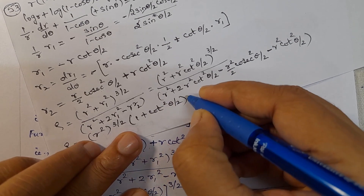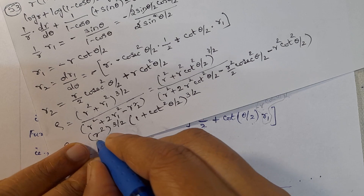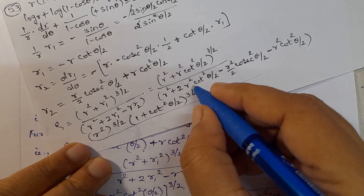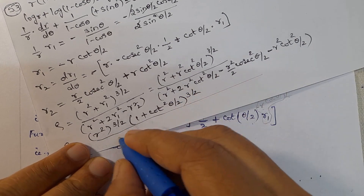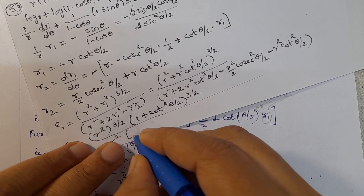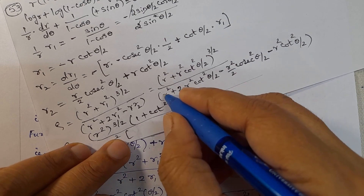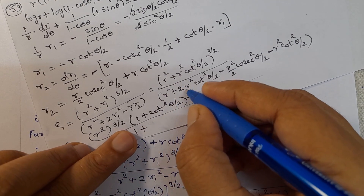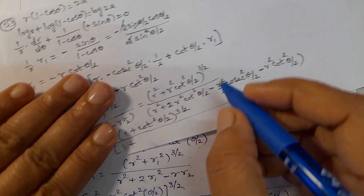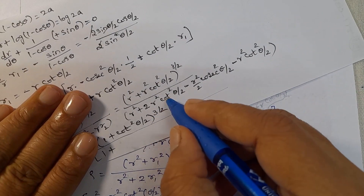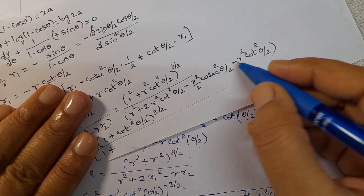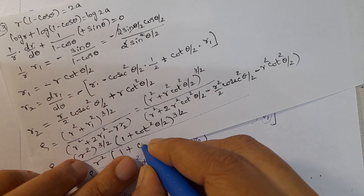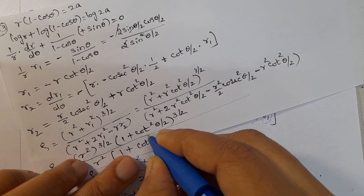Numerator: r³ cosec³(θ/2). Denominator: taking r² as common — 1 + 2cot²(θ/2) - (-1/2 cosec²(θ/2) - cot²(θ/2)) — simplifying gives r² × (1 + cot²(θ/2) + 1/2 cosec²(θ/2)). Further: 2 cot²(θ/2) - cot²(θ/2) = cot²(θ/2).